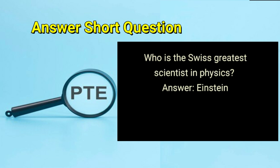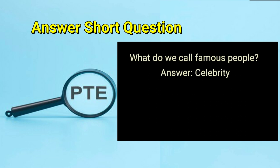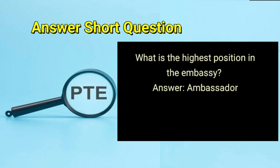Who is the Swiss greatest scientist in physics? Answer: Einstein. What do we call famous people? Answer: celebrity. What is the highest position in the embassy? Answer: ambassador.